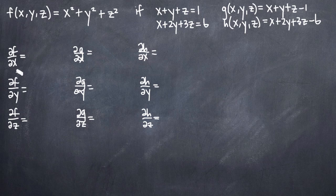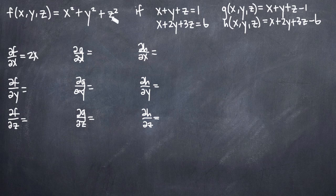The partial derivative of f with respect to x: when taking the partial with respect to x, we treat y and z as constants. So the partial of x squared is 2x, while y squared and z squared become 0. Similarly, the partial of f with respect to y gives us 2y, and the partial with respect to z gives us 2z.